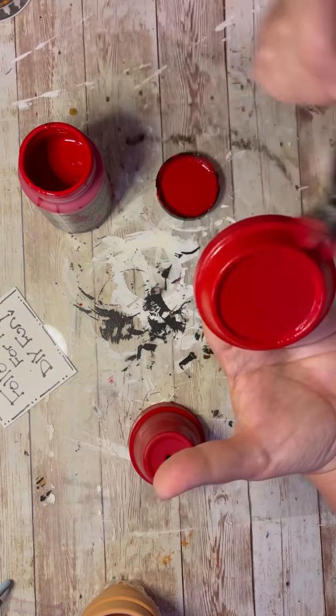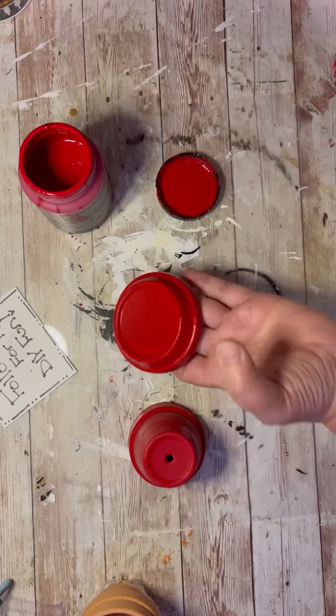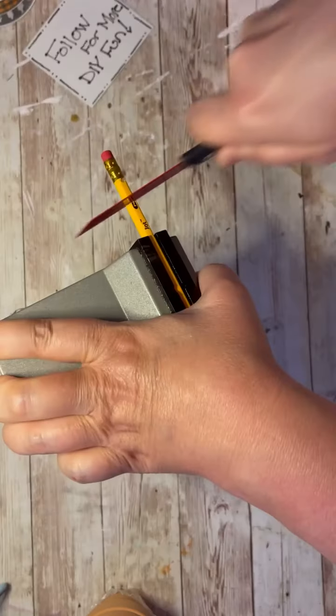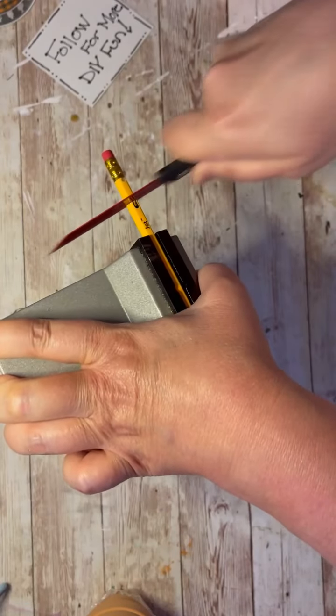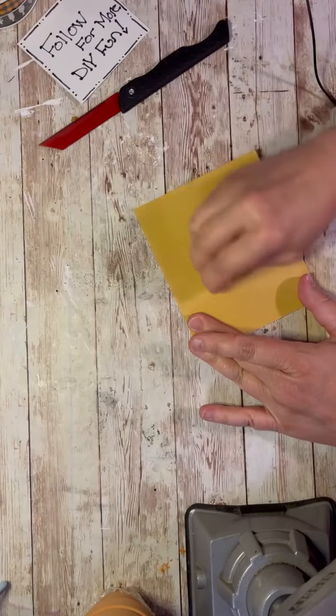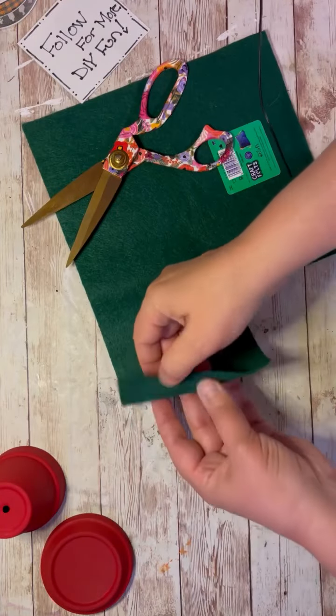Alright, so do that and then let it dry really well. I wanted to show you how I did the painting so you could see how I kind of moved them around. Then I take this little pencil from Dollar Tree and I cut it. It's about an inch long, maybe.